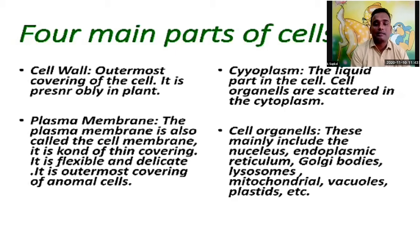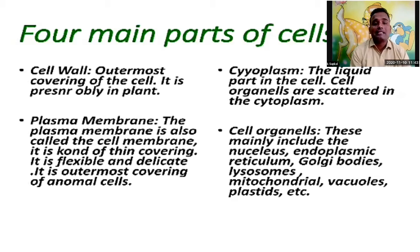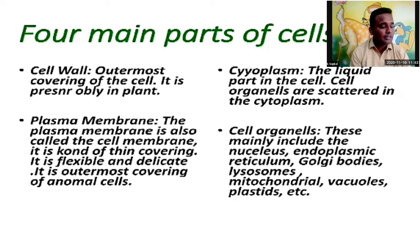Cytoplasm is the liquid part inside the cell, and cell organelles are scattered in the cytoplasm. The cell organelles mainly include the nucleus, endoplasmic reticulum, Golgi bodies, lysosomes, mitochondria, vacuoles, and plastids. These are the things that come under the cell organelles.